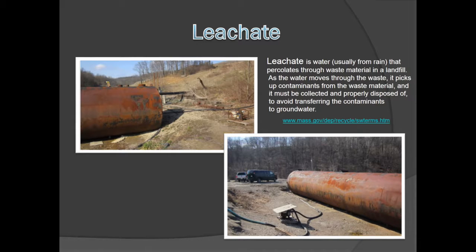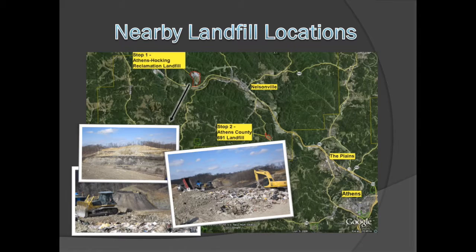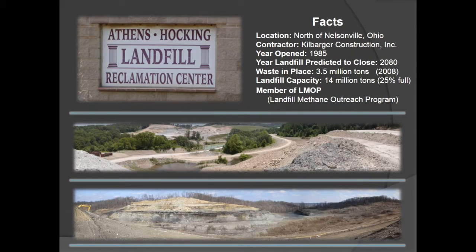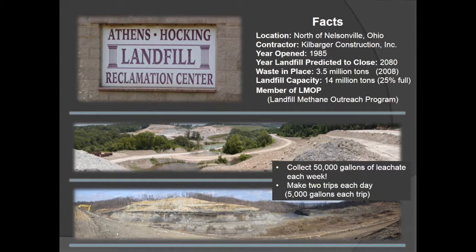How much leachate does a landfill produce? Let's look at the Athens Hawking Reclamation Landfill, located near Nelsonville, Ohio. As of 2008, the landfill holds 3.5 million tons of waste. It is capable of holding 14 million tons and is predicted to reach capacity in 2080. This landfill produces 50,000 gallons of leachate per week. Every day, 10,000 gallons of leachate are removed. This seems like quite a lot of leachate to keep removing, so what might be a better way to remediate this problem?